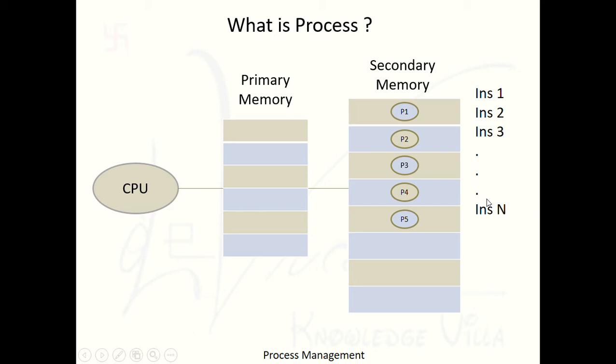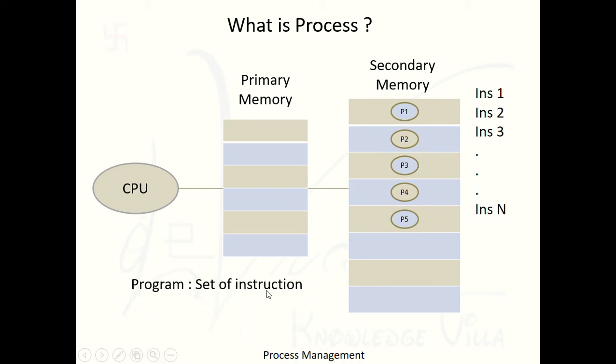An instruction is also a line of code. For example, suppose you are writing a calculator program for addition, you declare variables a, b, and c, and you write 'c = a + b'. So 'c = a + b' is one instruction. Every program carries a number of instructions. All five programs — P1, P2, P3, P4, P5 — are carrying a number of instructions. So we can define a program like this: a program is a set of instructions.